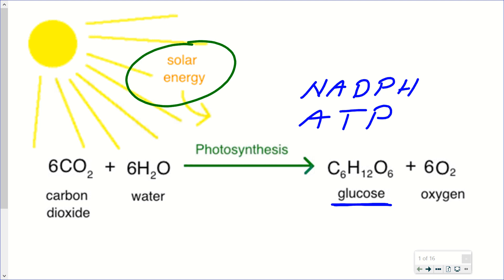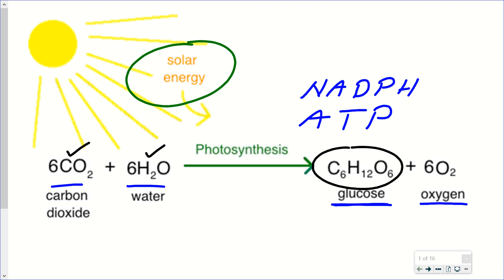For plants to do this, in addition to taking in that solar energy, what they also need is carbon dioxide and water. And overall, along with the production of glucose, there's also going to be the production of oxygen. This is the overall equation. It's much more complicated than simply taking carbon dioxide in the plant and water in the plant and combining them together to produce the glucose.